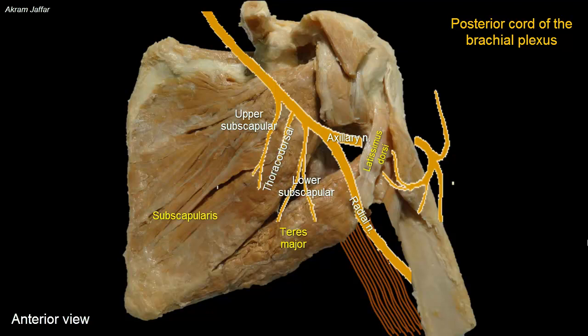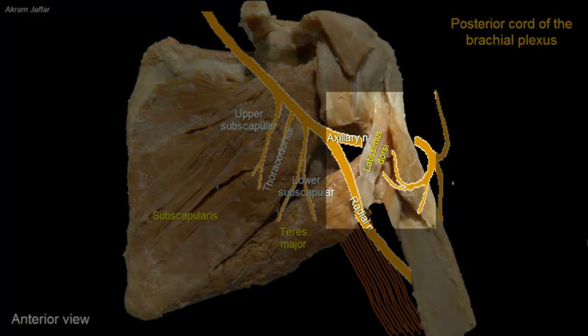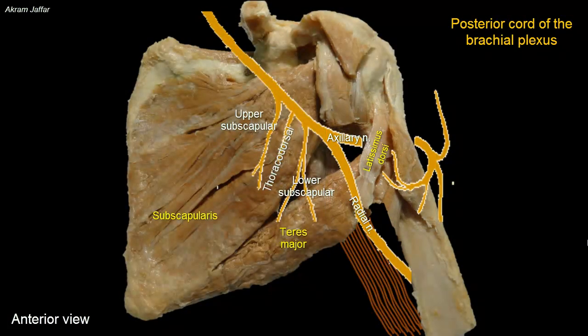The thoracodorsal nerve continues to reach the fleshy part of the muscle, which has been removed here. As mentioned earlier, the only part of latissimus dorsi shown here is the ribbon-like tendon, as it spirals in front of teres major to be inserted into the floor of the intertubercular groove of the humerus. Teres major is attached to the medial lip of the intertubercular groove, while the lateral lip receives pectoralis major.